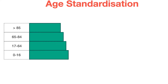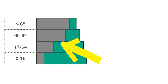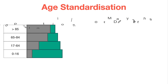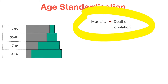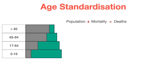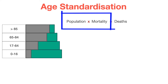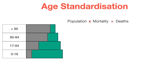Let's divide the population into age bands. The green bars represent the size of the population in each age strata. The gray bars are the proportion of that group that die because of the disease we're interested in. Remember that mortality rate is deaths per population — the number of deaths divided by the population size. So the population size times the proportion of people who die in that population will give you the number of deaths.